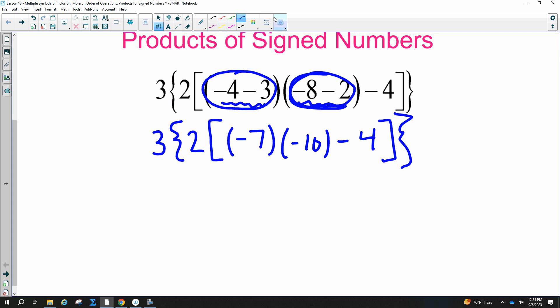So inside those parentheses, be sure you keep the parentheses. Now we can simplify these parentheses next. So next, I'm working inside the brackets right there. What do I have to do first, everyone? Yes, I have to multiply. So I have 3 and then a squiggly bracket and a 2, and I've got this bracket. And I need to multiply this first. That would be positive 70 because it's negative times a negative. And then I have the minus 4 and the squiggly bracket.